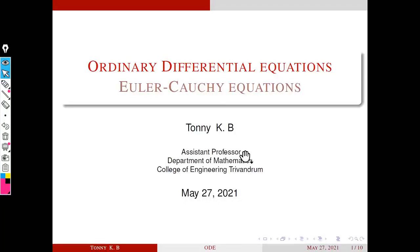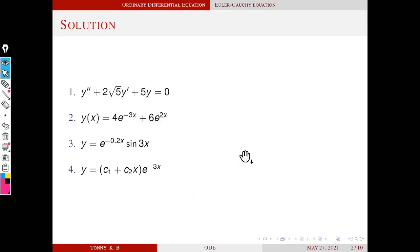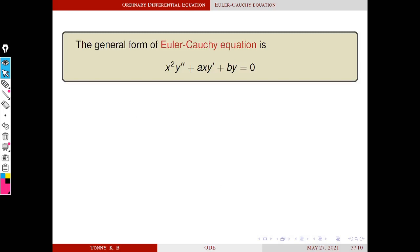Namaskaram. Today we are going to discuss Euler-Cauchy differential equations. It's a special kind of ordinary differential equation. The general form is: x² y'' + axy' + by = 0.